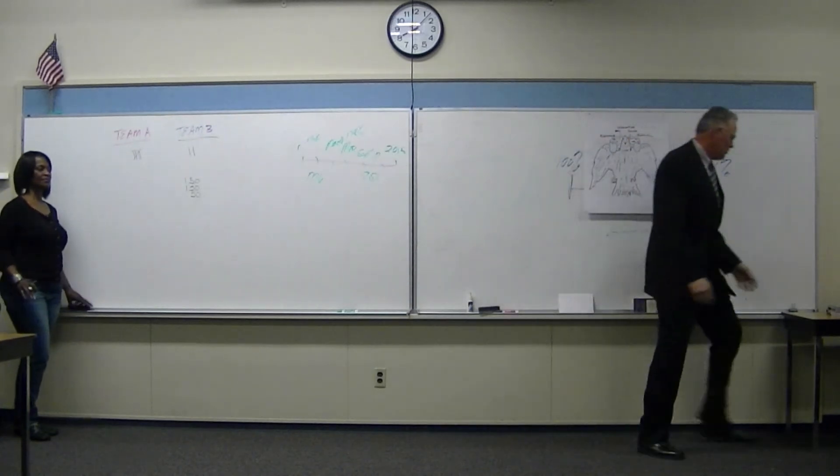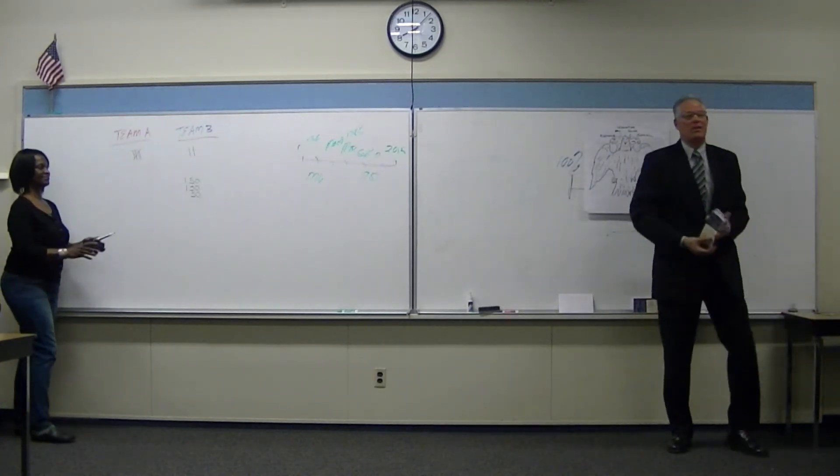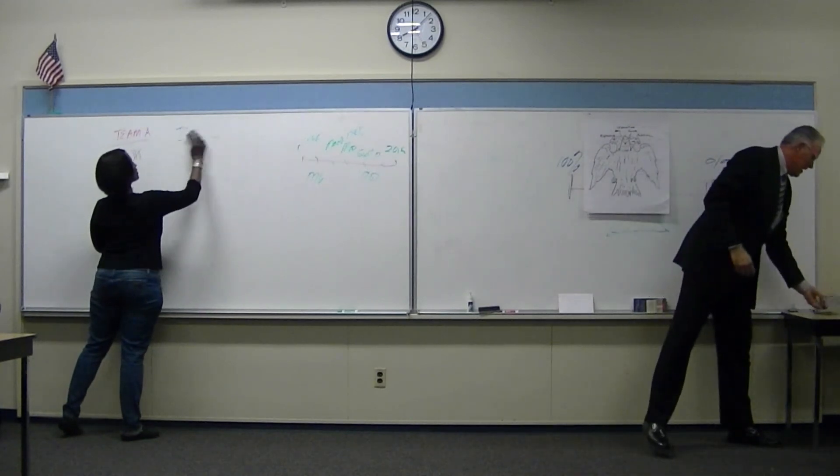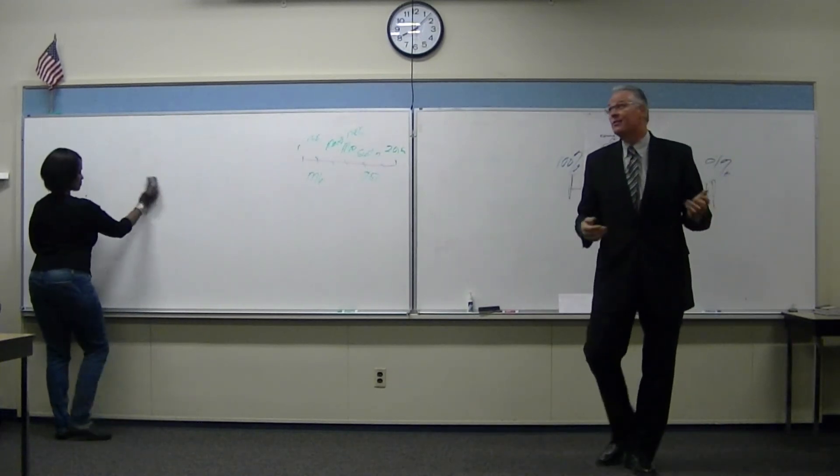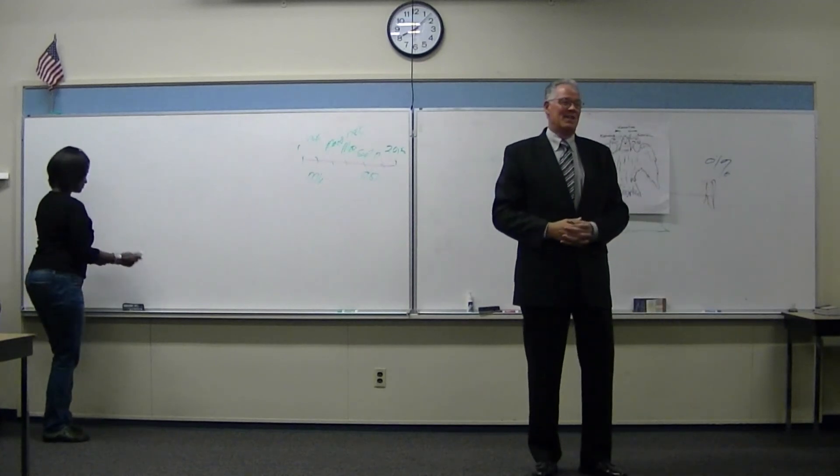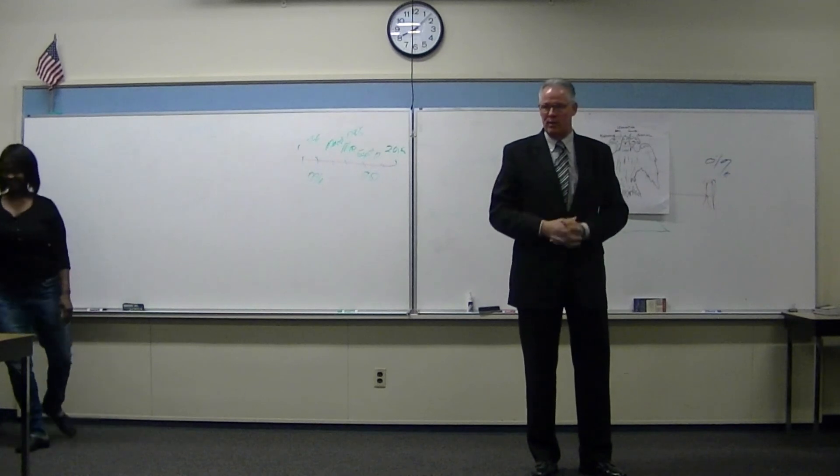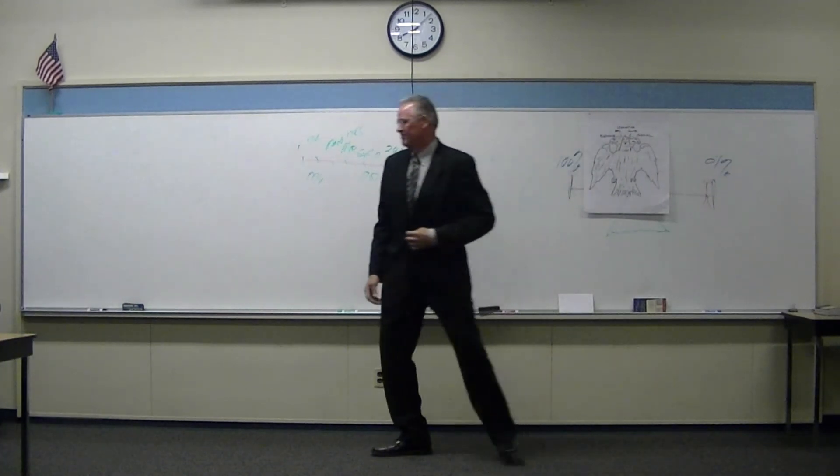Who won? Team B. Team B, you won a pocket-sized Constitution. I'll put them on the desk over there. Team A, if you want to take one, I'll turn my head. That's why they did what they did. Cause and effect. They knew what they were doing. Thank you.